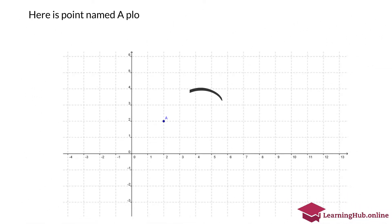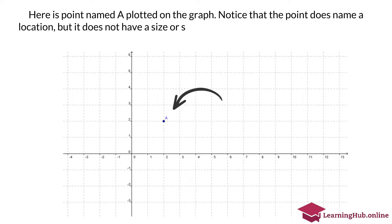Here is a point named A, plotted on the graph. Notice that the point does name a location, but it does not have a size or shape.